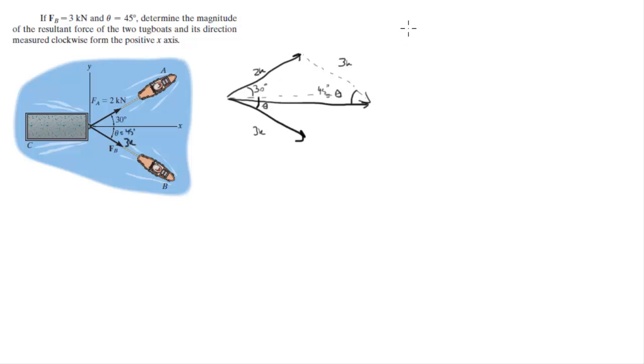So to figure this out, we're going to use the law of cosines. The law of cosines states that C squared is equal to A squared plus B squared minus 2 times A times B times the cosine of angle C.